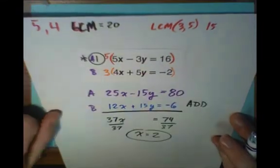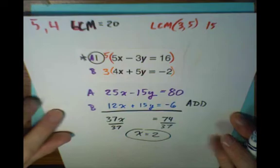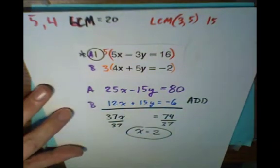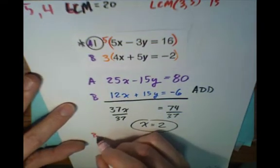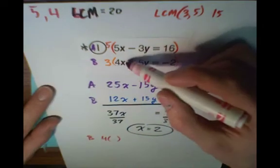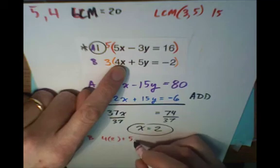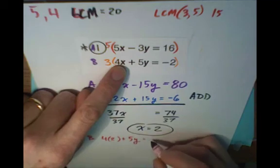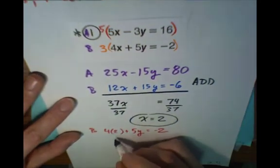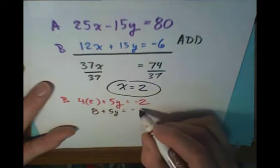And now I plug it back in. I could plug it back into whatever equation is easiest. I like my original two equations, A and B. In fact, I'm going to plug it into equation B. Your mileage may vary. I'm going to use equation B, which says that 4x, and again, we now know what x is. 4x is 2. 4x plus 5y equals negative 2. And so now I'm going to solve. This is 8 plus 5y equals negative 2.